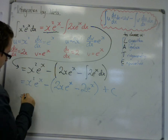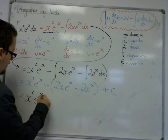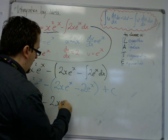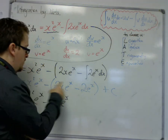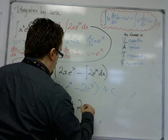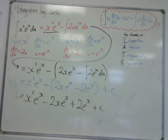So, multiply that bracket, and we get left with, take away 2x e to the x, now we've got 2 minuses there, so that's a plus 2 e to the x, plus c. And that is my final answer.